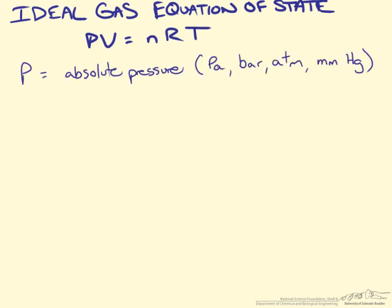Make sure to use the absolute pressure and typically the units on that will be pascals, bars, atm, mm Hg, etc. The V stands for the volume of the gas and the units on that will typically be liters, meters cubed, milliliters, maybe even feet cubed.